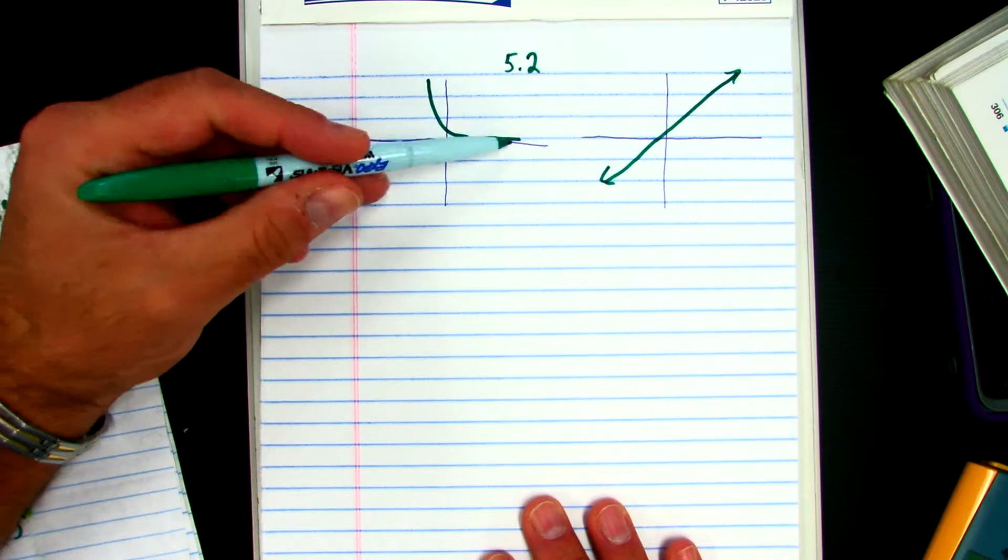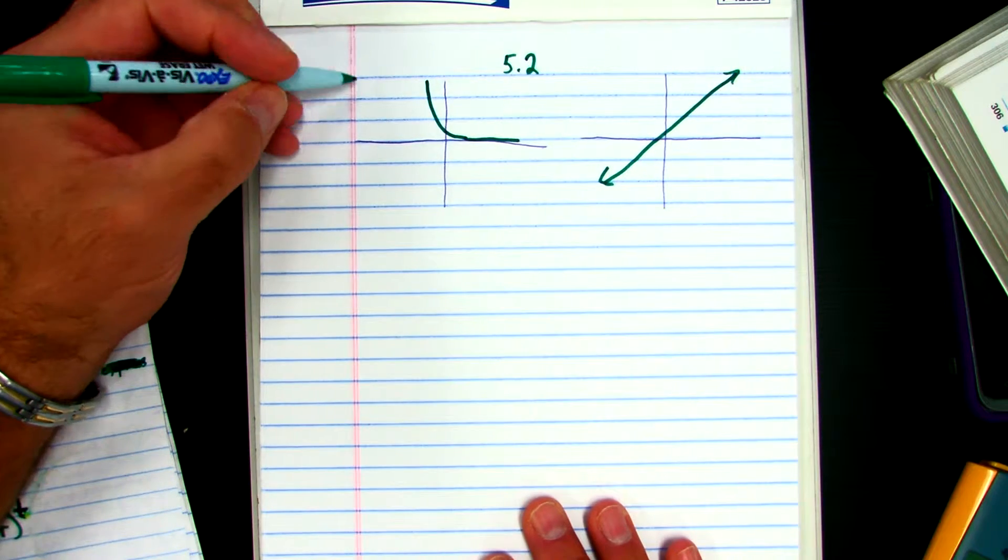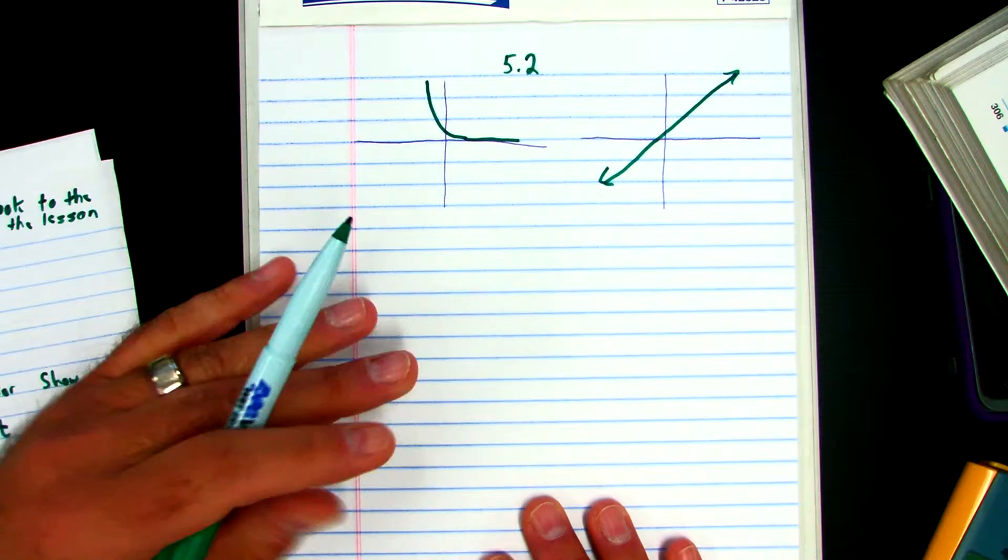5.2 was exponential, which was our compound interest. This one's linear, which was our simple interest.